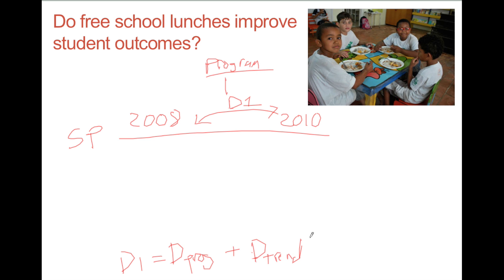Now suppose we also observe test scores in 2008 and 2010 in Rio, another large city in Brazil, not far to the north on the coast. If we're willing to assume that the difference across time in Rio is reflective of what would have happened in Sao Paulo, then we can use the difference D2 as an approximation of what the trend is, and we get our first difference-in-difference estimate. That is the difference in the differences, D1 minus D2.